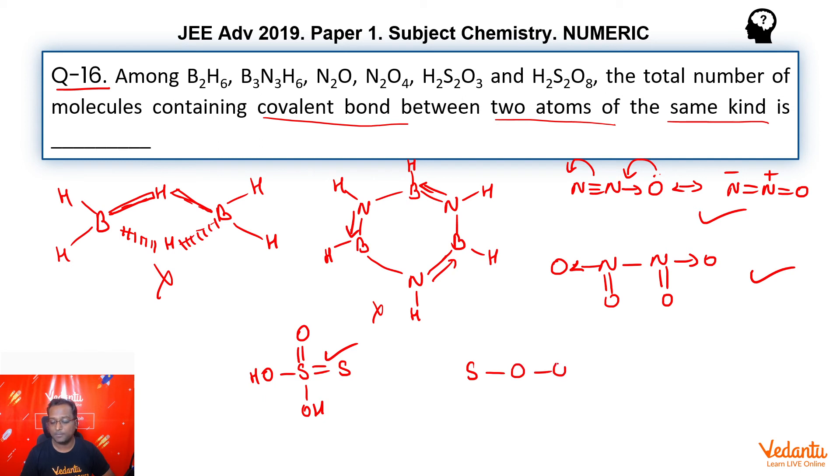H2S2O8, that is Marshall's acid or per-disulfuric acid. We know that this is a peroxide linkage present in it. And therefore, we have a same atom bond.